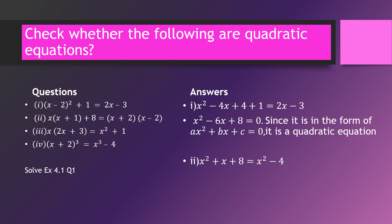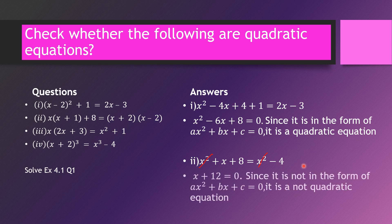Next example: x squared plus x plus 8 equals x squared minus 4. Here, the x squared terms cancel each other. What remains is x plus 8 equals minus 4, giving x plus 12 equals 0. Since there is no x squared term, it is not in the form ax squared plus bx plus c equals 0, so it is not a quadratic equation. We cannot tell just by looking — we must simplify first.